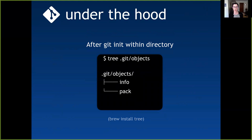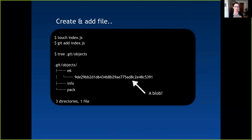I found this super interesting when I was doing research — I used Homebrew to install the tree command. This is a snapshot copied from my terminal. After making a new directory and running git init, if you run tree it does a recursive ls through all files and directories. This is an empty .git folder — the info and pack files are always there by default. After running touch index.js and adding it to git tracking, running tree again shows one file listed: the git blob, which is the base-level file object in Git.